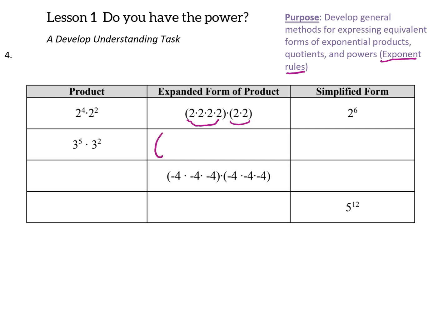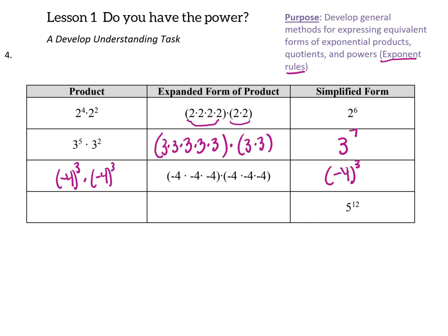Applying that same logic to the second row: 3 to the 5th power is 3 multiplied by itself 5 times, and 3 squared is 3 multiplied by itself twice — so all together, I have 3 multiplied by itself 7 times. Similarly, on the next row, negative 4 times itself 3 times in the first parentheses and negative 4 times itself 3 times in the second gives us negative 4 to the 6th power.